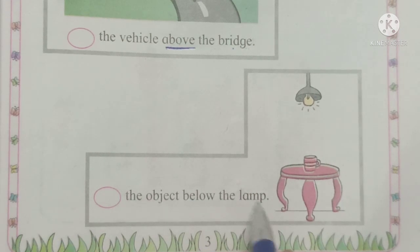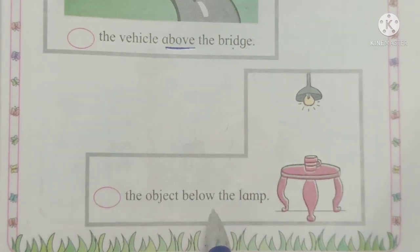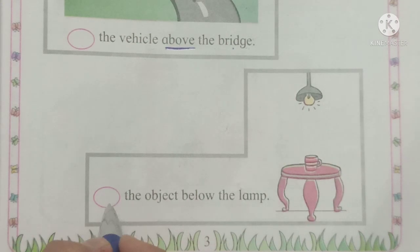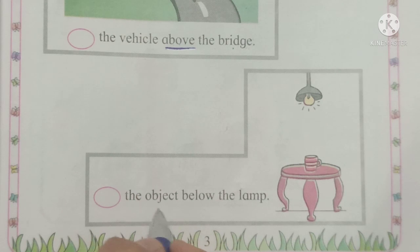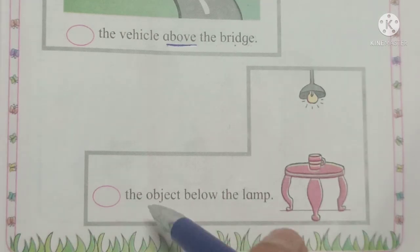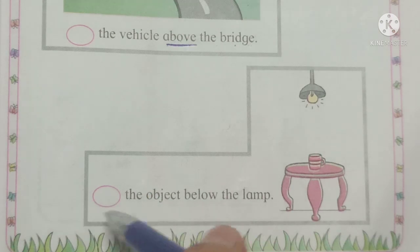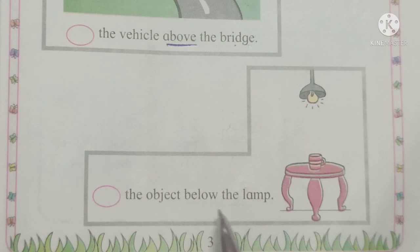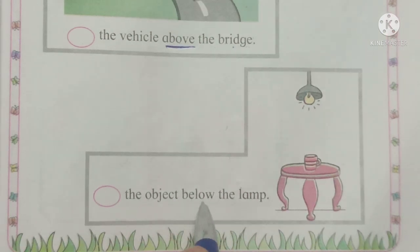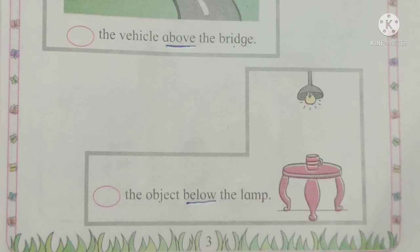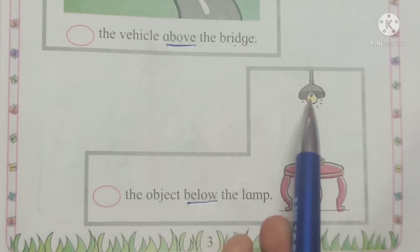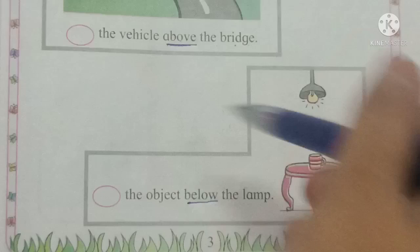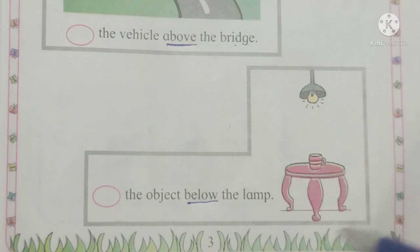Circle the object below the lamp. Object means 'वस्तू'. We have to circle the object — which object do we circle? Below the lamp. Below means 'खाली'. This is the lamp. The object that is below the lamp — that is what we need to circle.